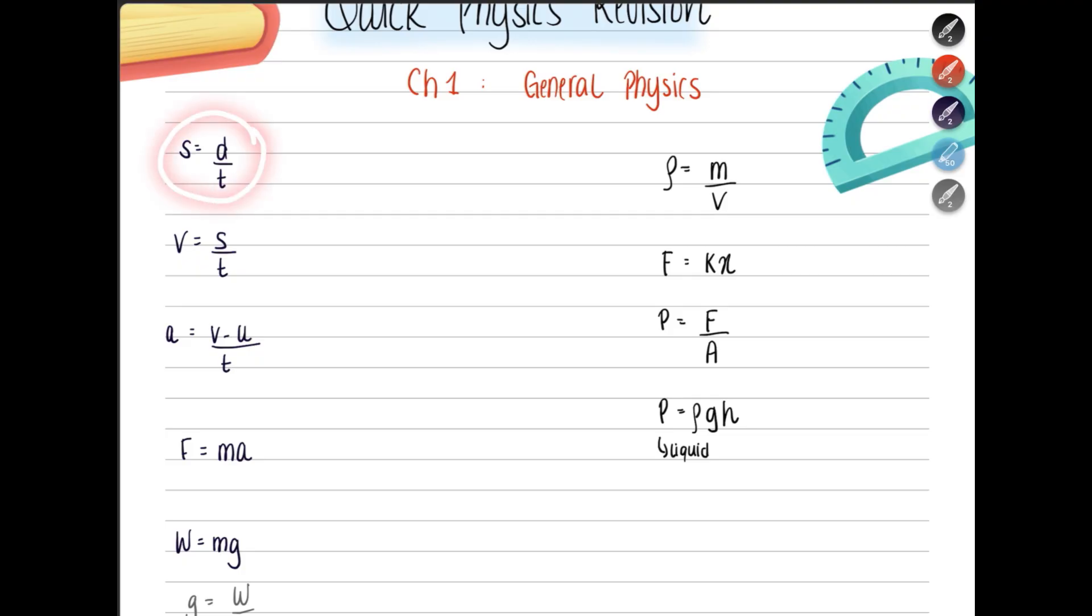Remember, speed is the scalar quantity, it's distance over time. The vector quantity for speed is velocity, which is displacement over time. This S is not distance, it's displacement. Acceleration is the rate of change of velocity, which is final velocity minus initial velocity divided by time.